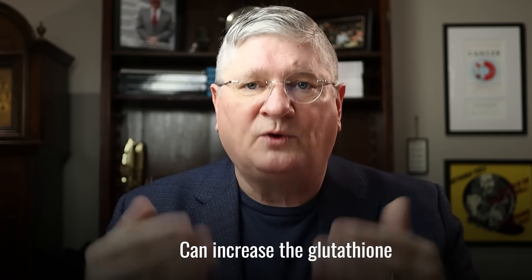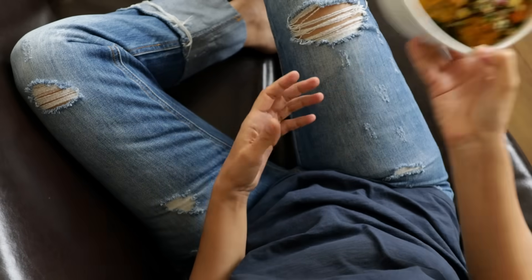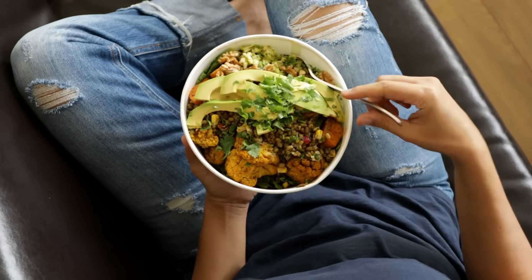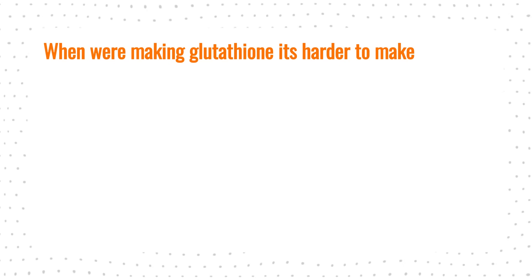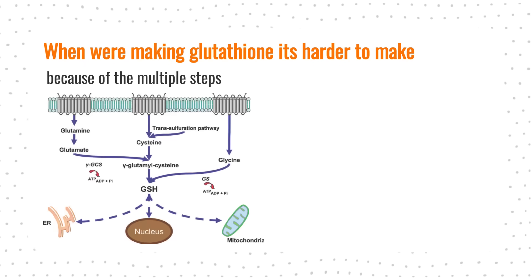Cysteine through N-acetylcysteine supplementation can increase glutathione. These three base antioxidants — glutathione, vitamin C, and vitamin E — work as a triplet. Glutathione we make in the body. Vitamin C we have to get from our diet because we don't make it as humans, and vitamin E we generally have to get from the diet as well. Making glutathione is a little harder because the body has to go through multiple steps.